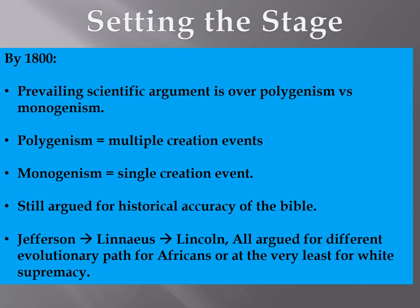At that time you had contemporaries like Thomas Jefferson, Linnaeus, and Abraham Lincoln who all argued for a different evolutionary path for Africans, or at the very least for this notion of white supremacy — that white people should be given the reins to rule and govern, whereas people of color are relegated to labor roles. This was essentially the prevailing thought at the time.